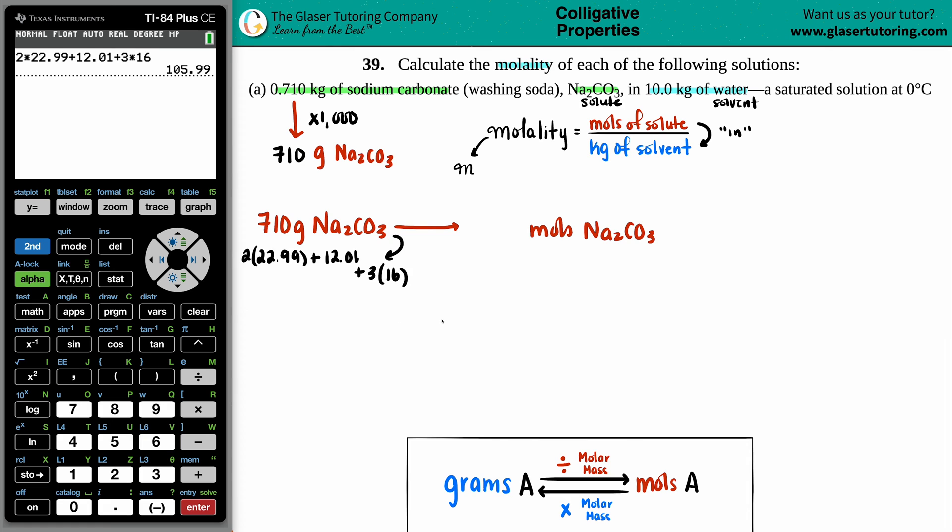Everything looks good. And the molar mass is 105.99. So I'm going to take my 710 and divide it by the 105.99. And that will be my moles. Lovely. So maybe I'll say 6.6987. Something like that.